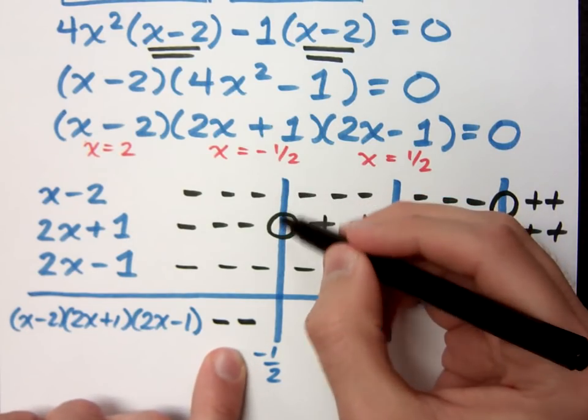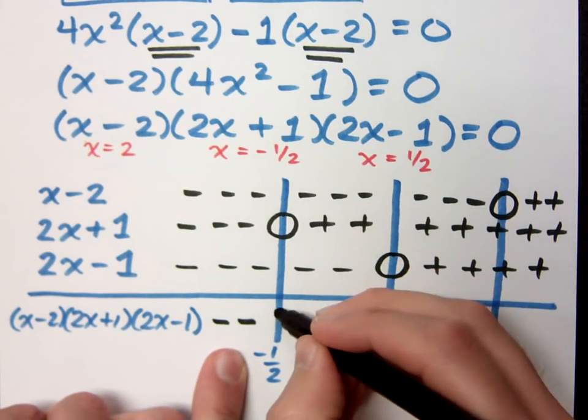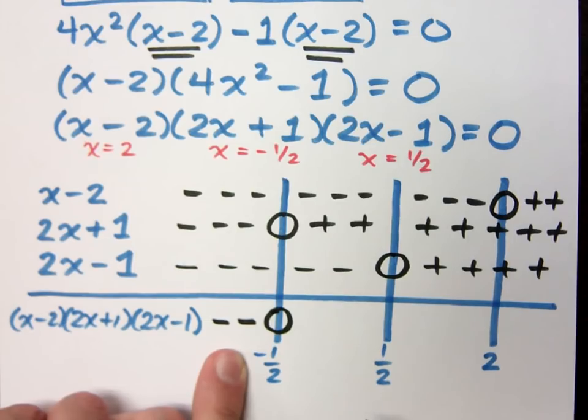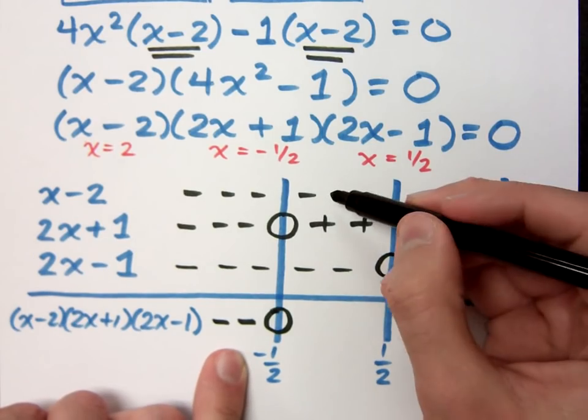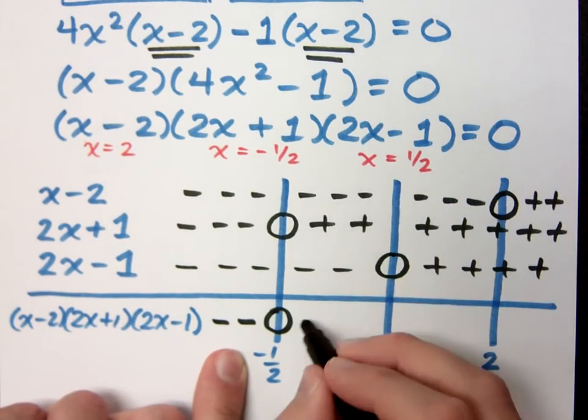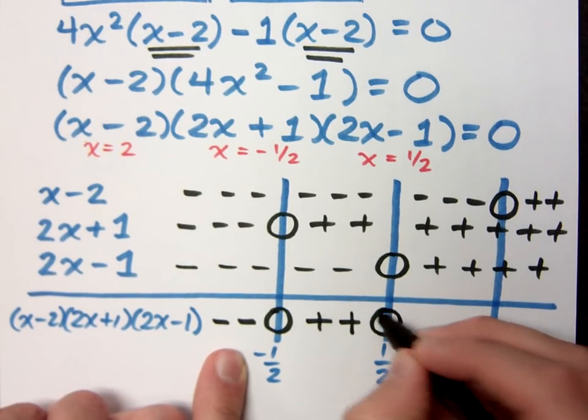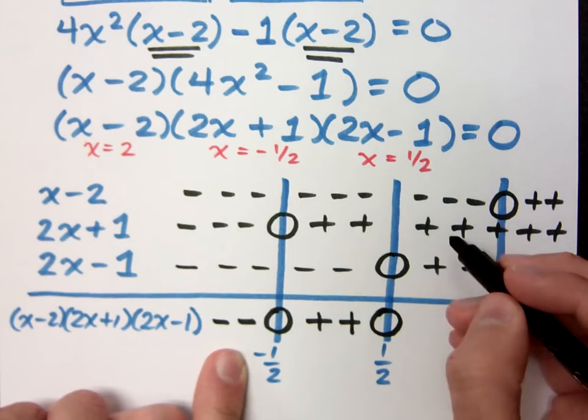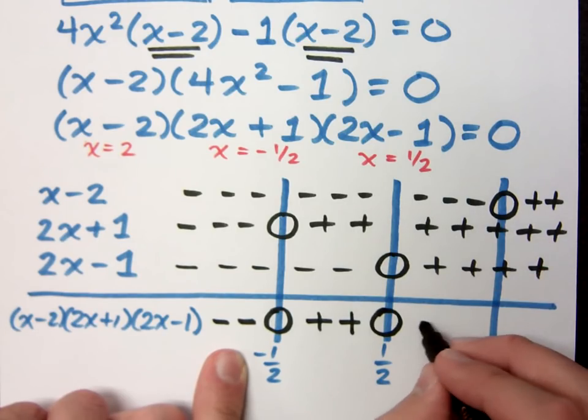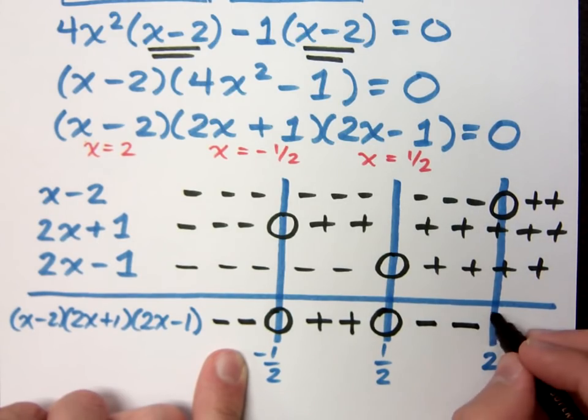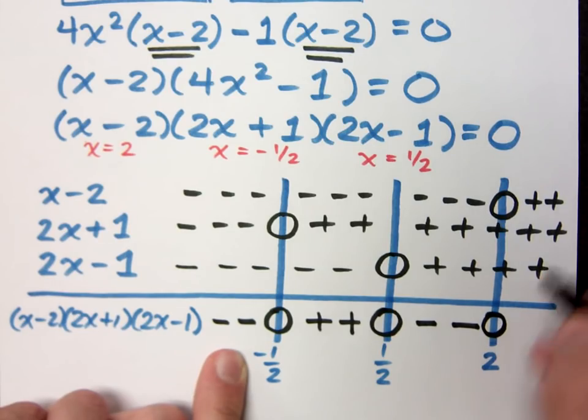Here, negative times 0 times negative is 0. Then here, negative times positive times negative. We're positive inside here. You have another 0 right here. Negative times positive times positive is negative. You have your 0 at 2. All of these are positive, so that's going to be positive as well.